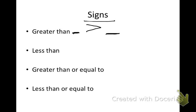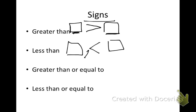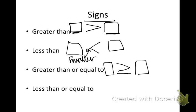If I want to show less than, I want to show that the first number is less than the second number. I'm going to make it easier to see. The pointing arrow is pointing at the smaller number. So again, my arrow points at the smaller number.